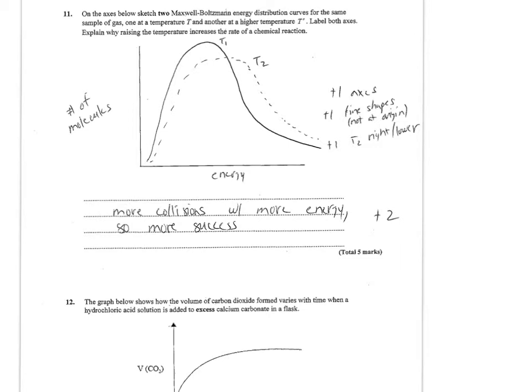The other thing you should show is you shouldn't have any particles at the origin or at zero energy because zero energy would be absolute Kelvin, and we haven't been able to do that experimentally. The explanation is that higher energy means more collisions with more energy, so there's going to be more success.